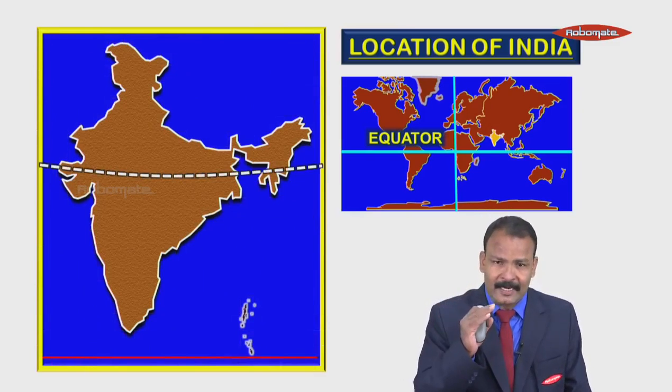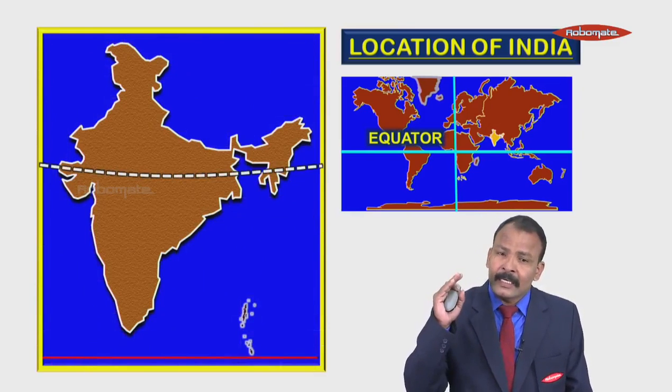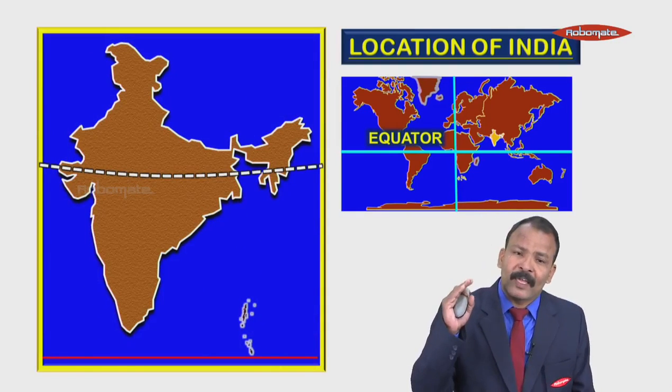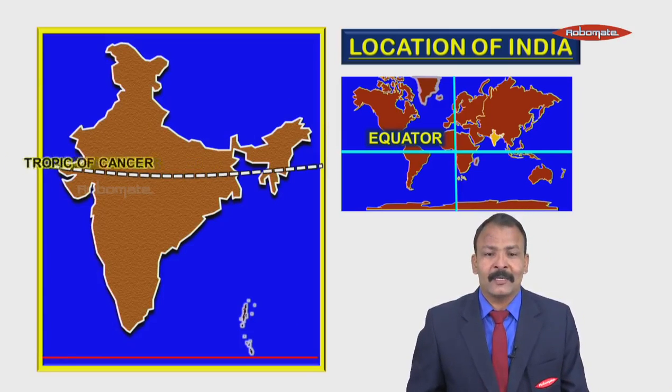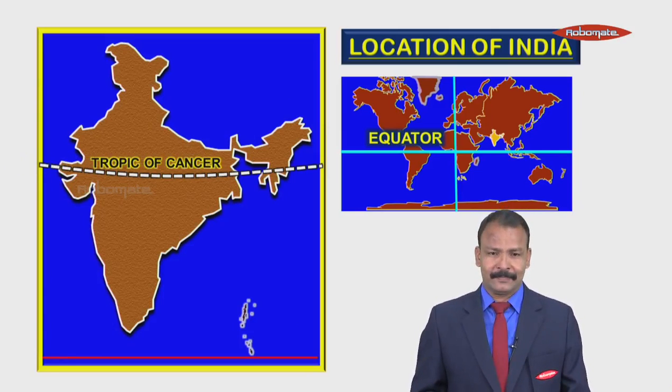This line — the Tropic of Cancer — passes through the middle of India.